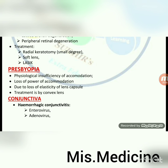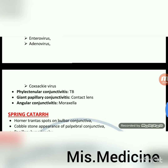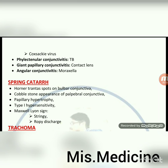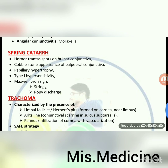Conjunctiva: hemorrhagic conjunctivitis by enterovirus, adenovirus and coxsackievirus. Phlyctenular conjunctivitis by tuberculosis (TB). Giant papillary conjunctivitis — contact lens. Angular conjunctivitis — Moraxella. Spring catarrh or vernal keratoconjunctivitis: Horner-Trantas spots on bulbar conjunctiva; cobblestone appearance of palpebral conjunctiva; papillary hypertrophy; type 1 hypersensitivity; Maxwell-Lyon sign; stringy ropy discharge.